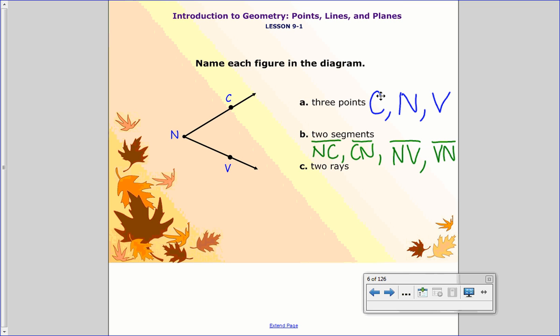All right, and then finally, two rays. Well, here you'd have ray NC, and then ray NB. So this time you couldn't go like this and call it BN, because there's no arrow going out that way. That's actually the end of the segment. So it has to be those two lists.